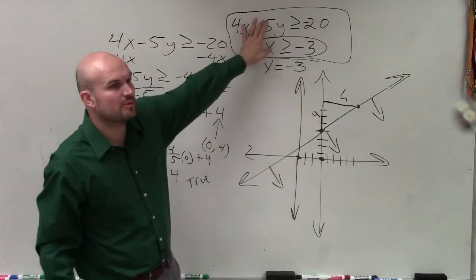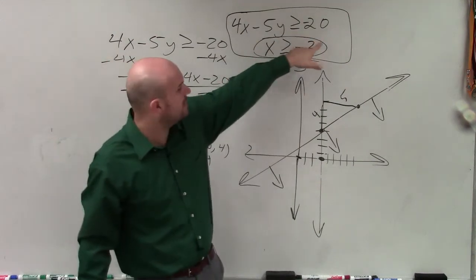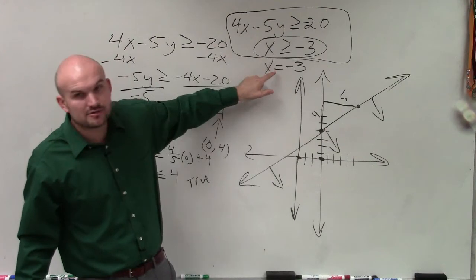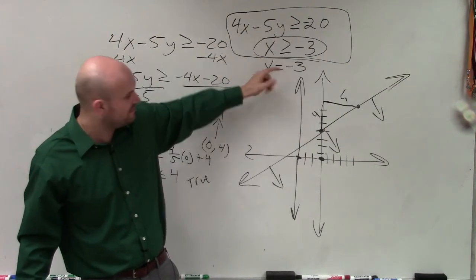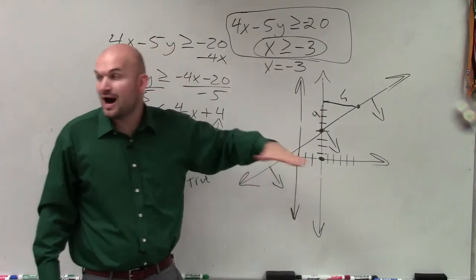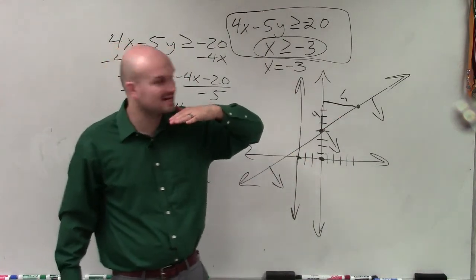This is different because now we're graphing two equations. That was the original problem. So I graphed this one. And now I'm graphing this one. And the way I was explaining x is greater than negative 3. If you guys remember, x is equal to negative 3. When graphing those, that just produces vertical lines. Right? Where y equals is going to produce horizontal lines.